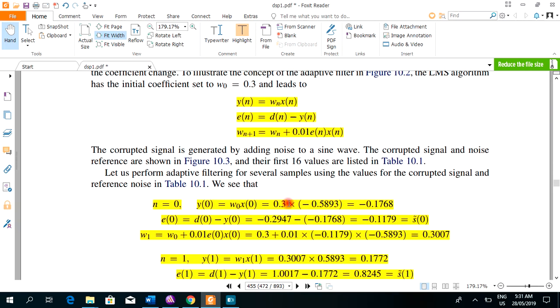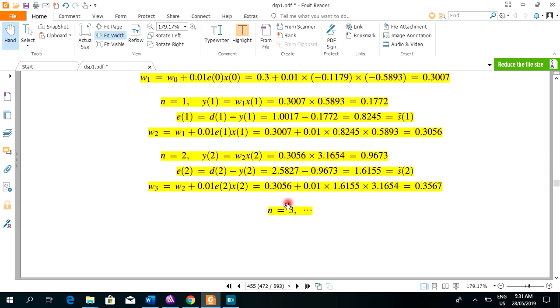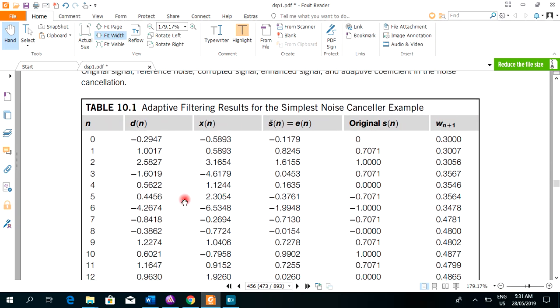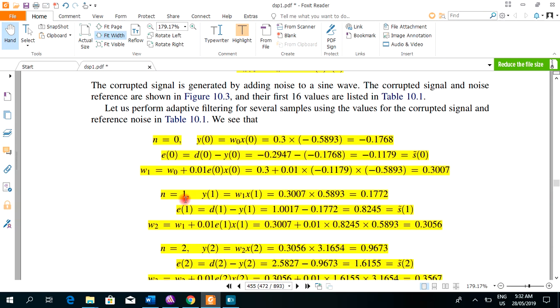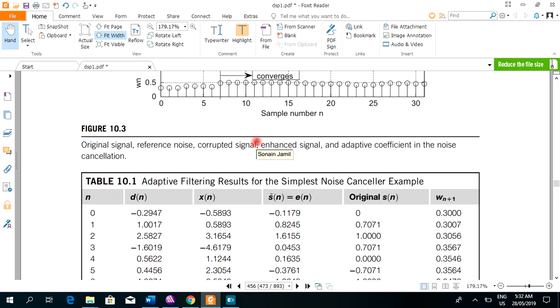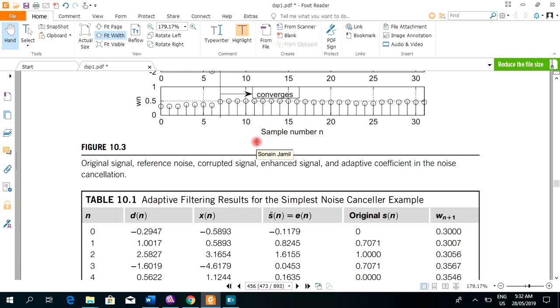Let's have some mathematical computations and comparisons. Corrupted signal is given in this table and data is also given. If you want to calculate error, just calculate D of N first, which is given. Y of N which is W of N into X of N. X of N is given. Just substituting the values, we can get weight update, original signal and error.